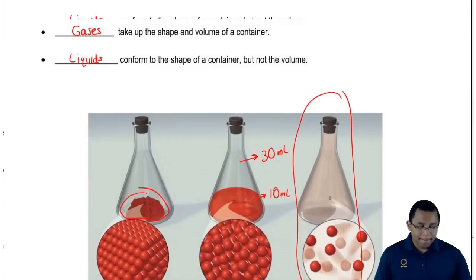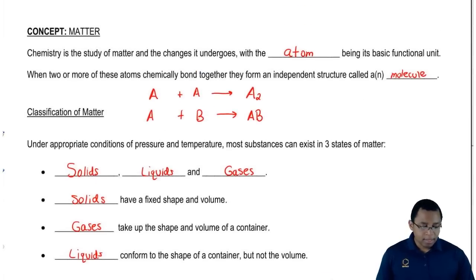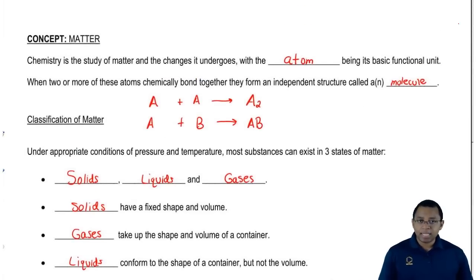Just remember, chemistry is just the study of matter. Matter has three different states. Each one have certain properties that they hold true to themselves. And remember, we're going to talk more later on about physical and chemical changes that matter can undergo. Understand these basic principles so that we can branch away from them to more complex and more chemical-based equations and ideas and concepts.